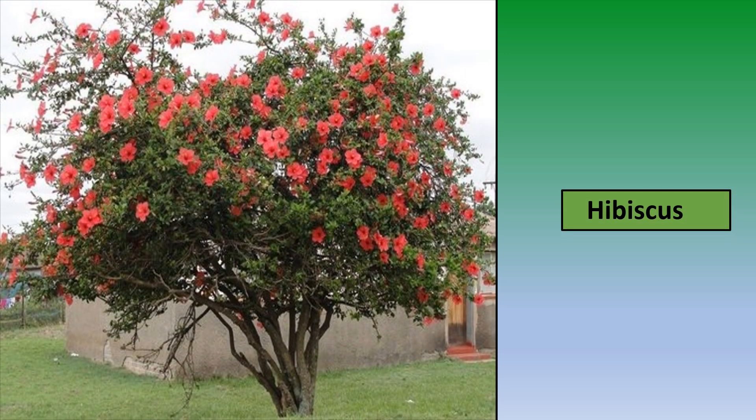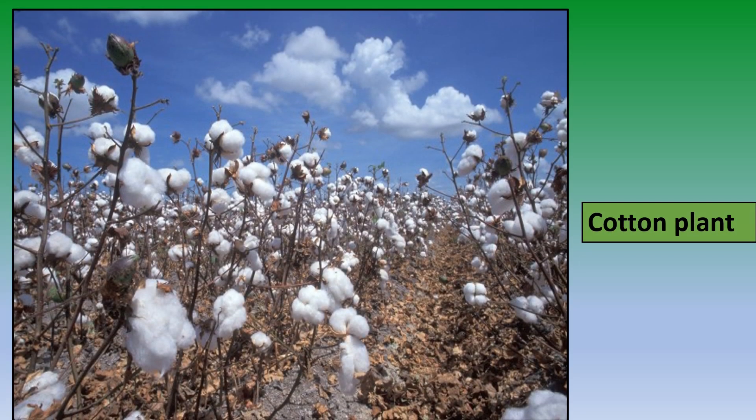Hibiscus is also a shrub, as it is bushy and has many branches. It also has woody stems which are growing close to the ground. The cotton plant is also an example of a shrub. So children, I'm sure you all know about shrubs now.